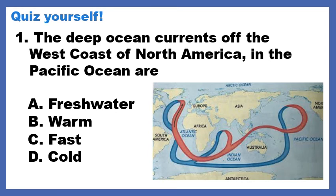The deep ocean currents off the west coast of North America in the Pacific Ocean are: A. Freshwater, B. Warm, C. Fast, D. Cold. I have a picture with my question, which is a map of deep ocean currents. I'm looking off the west coast of North America in the Pacific Ocean — I've tried to include that inside my yellow circle. Remember that the west coast of North America is the side that California is on.